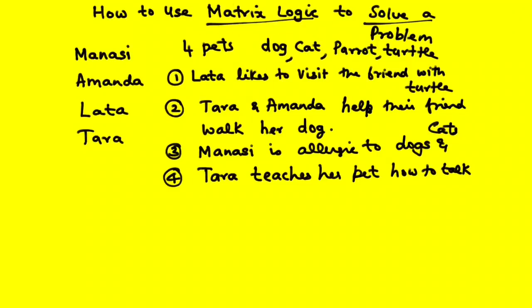Here are the four pieces of information. Latha likes to visit the friend with a turtle, so Latha visits a friend with a turtle. Tara and Amanda help their friend walk her dog. Manasi is allergic to dogs and cats, so she can't own dogs and cats. And Tara teaches her pet how to talk. Using this information, we are going to find out who is owning what.